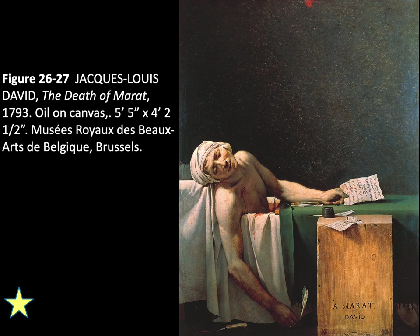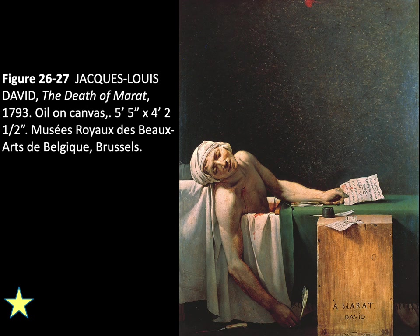David depicted the revolutionary Marat as a tragic martyr, stabbed to death in his bath. Although the painting displays severe neoclassical characteristics, its convincing realism conveys pain and outrage. When the revolution broke out in 1789, David accepted the role of de facto minister of propaganda, organizing political pageants and ceremonies requiring floats, costumes, and sculptural props. David believed that art could play an important role in educating the public, and that dramatic paintings emphasizing patriotism and civic virtue would prove efficient as rallying calls. Rather than continuing to create artworks focused on scenes from antiquity, David began to portray scenes from the French Revolution itself.